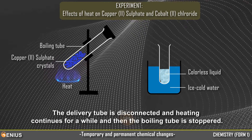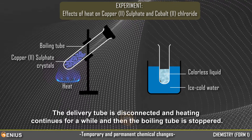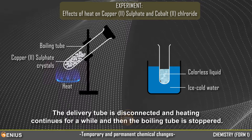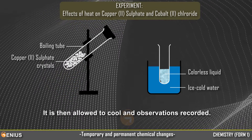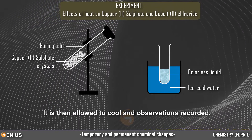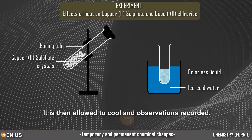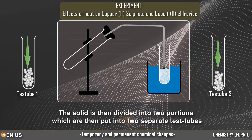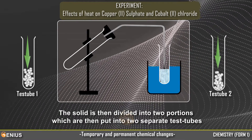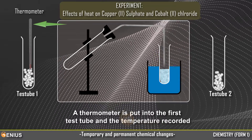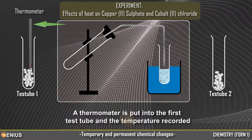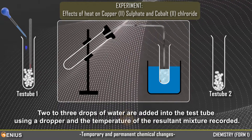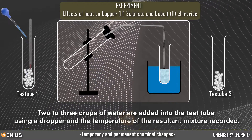The delivery tube is disconnected, heating continues for a while, and then the boiling tube is stoppered. It is then allowed to cool and observations are recorded. The solid is then divided into two portions which are put into two separate test tubes. A thermometer is put into the first test tube and the temperature recorded. Two to three drops of water are added into the test tube using a dropper and the temperature of the resultant mixture is recorded.